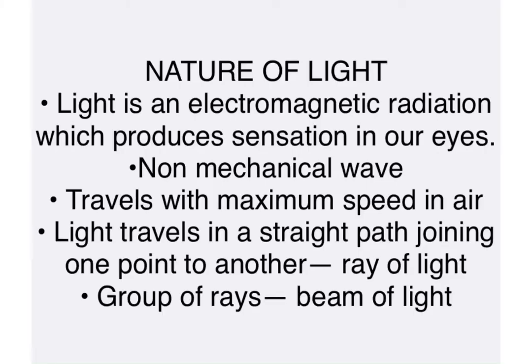This chapter basically deals with light. So first of all let us study the nature of light. Light is an electromagnetic radiation which produces sensation in our eyes. Many types of radiations are coming from the sun towards the earth, but electromagnetic radiations are the ones which are able to create sensation in our eyes, which we are able to see, and we call it as light.